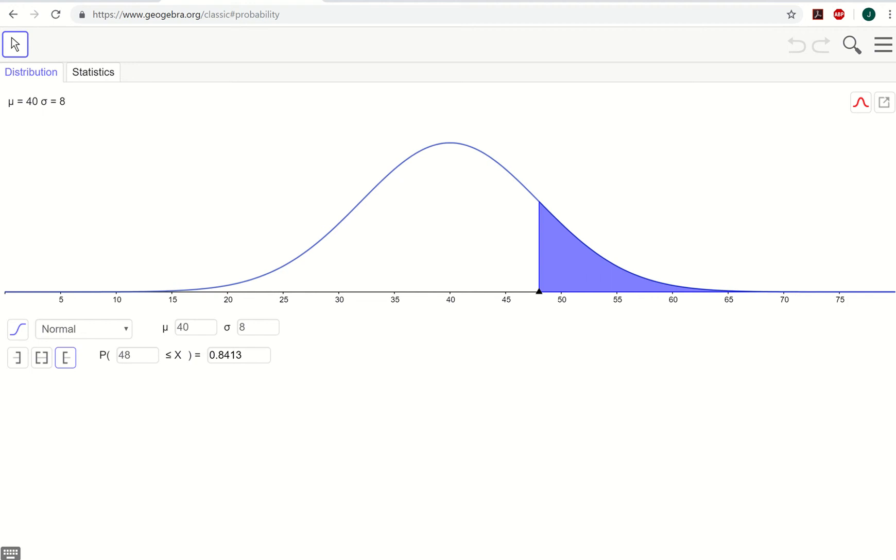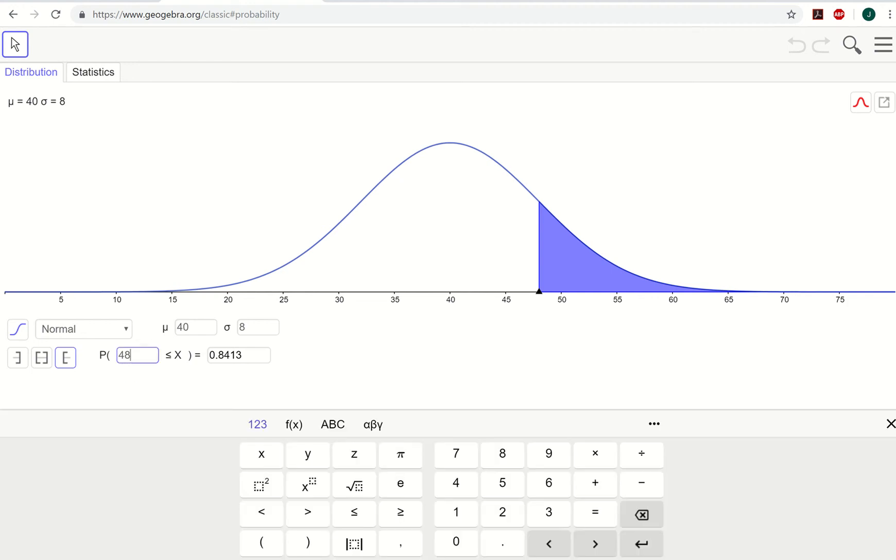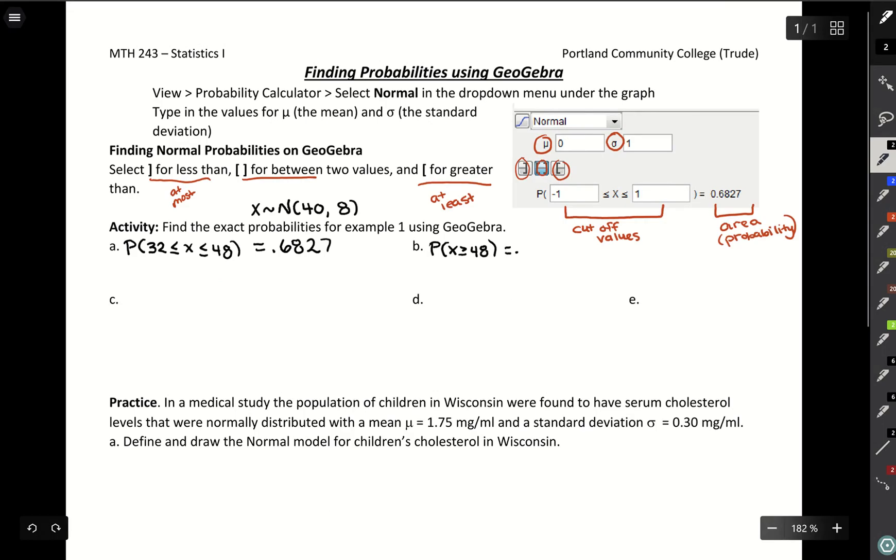Just always be sure to hit enter when you're done so that it adjusts the area. Did I hit enter? There it is. That 0.843 didn't make sense because that area was saying it was much larger than what's appearing right now. 0.1587, which is close to our 16% that we talked about.